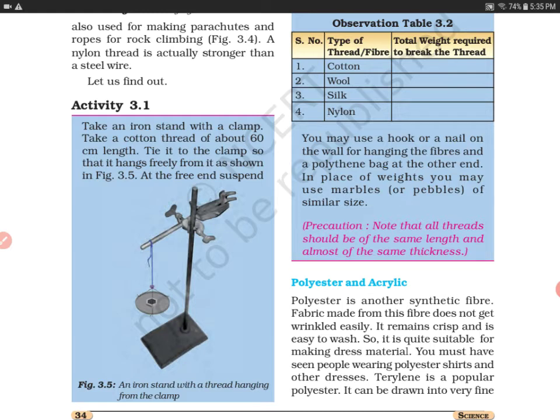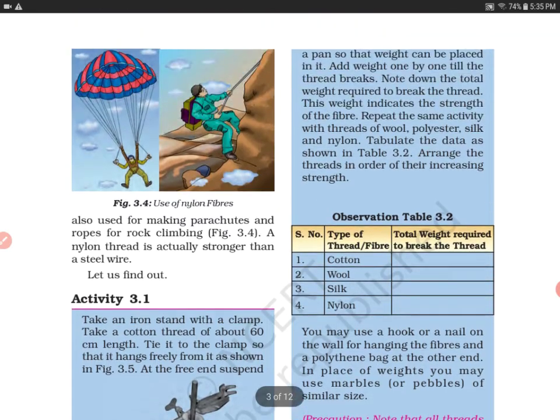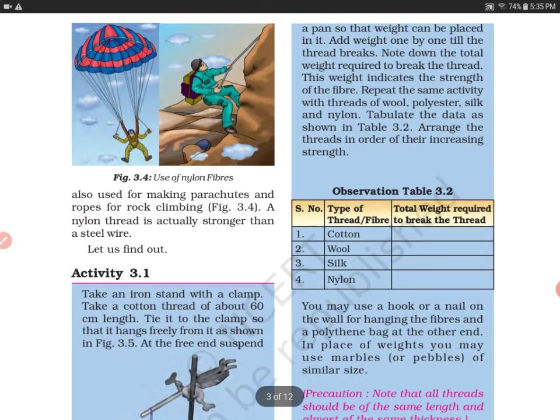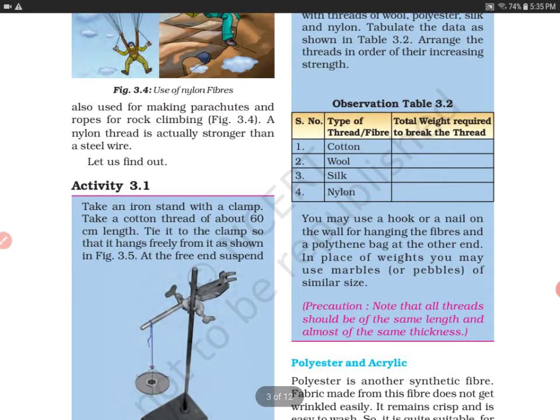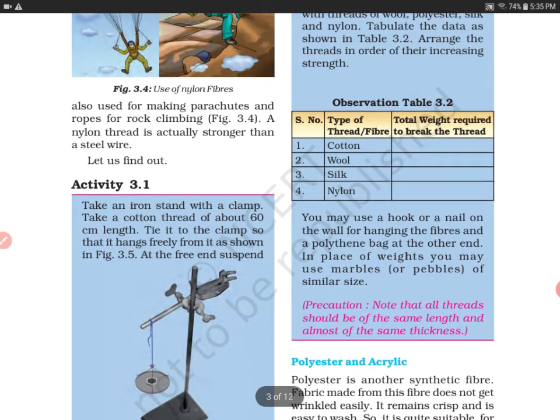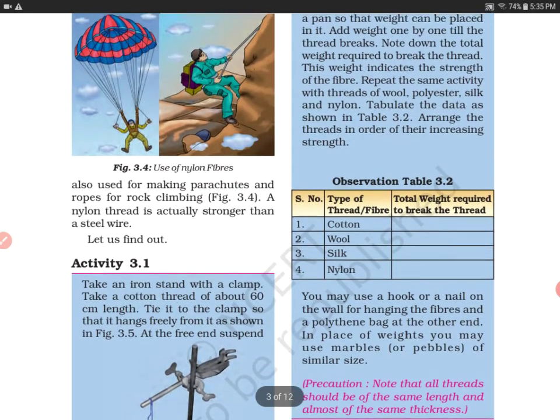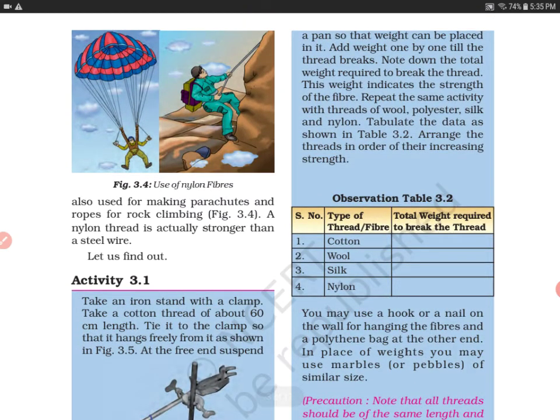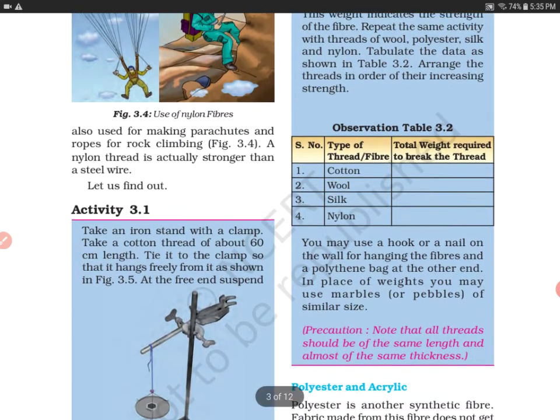At the free end, suspend a pan so that weights can be placed in it. You can see it's like a weight balance. Now add weights one by one until the thread breaks. You are supposed to add weight into this pan until your cotton thread breaks.